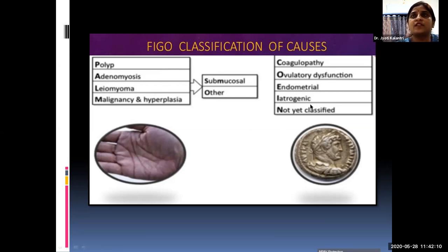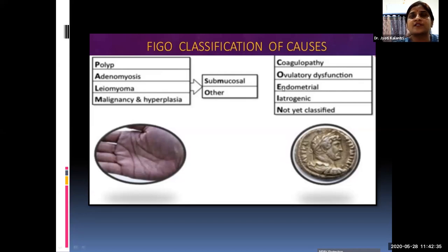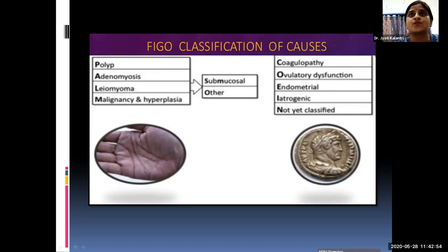Coagulopathy includes conditions like von Willebrand's disease and thrombocytopenia. Ovulatory dysfunction is the category most relevant to metropathia hemorrhagica. Endometrial disorders cover functional hyperplasia. Iatrogenic causes include patients on hormonal therapies or hormone replacement therapy. We should always remember these possibilities when a patient presents for treatment. Earlier AUB was called DUB; the new nomenclature is AUB.